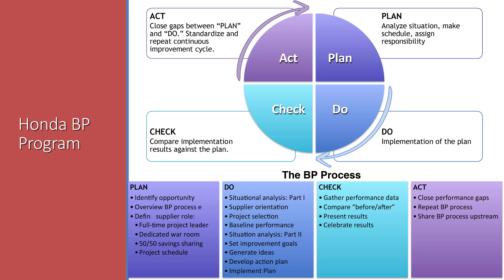Once we check on things, we need to close our performance gaps. Maybe we realize we should have added someone to the team. We document that so the next time there's a planning phase, that information is available to the next planner. When they go to update a business process, they can see that they should include that person on the team. Then they continue through the Plan-Do-Check-Act cycle.